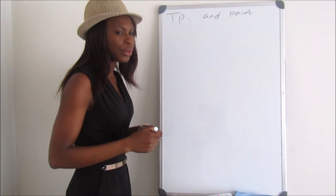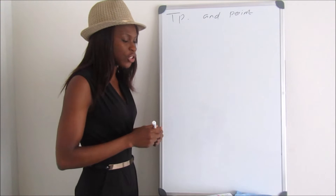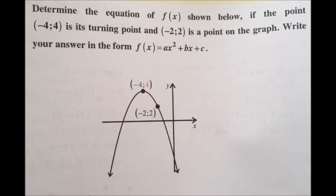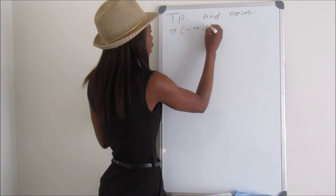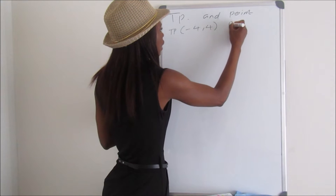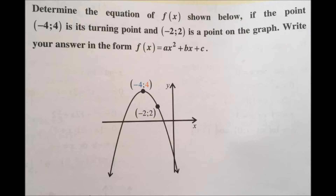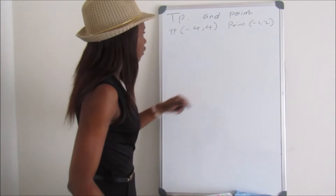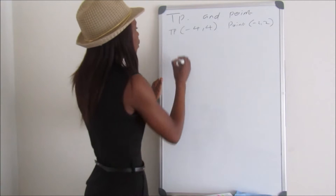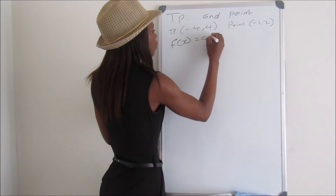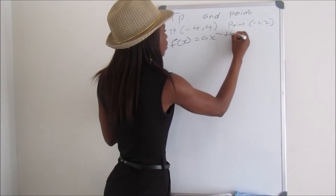The equation says: determine the equation of the parabola given the turning point of (-4, 4) and another point (-2, 2). The final answer should be written in the format f(x) = ax² + bx + c.